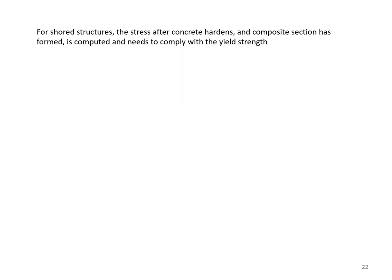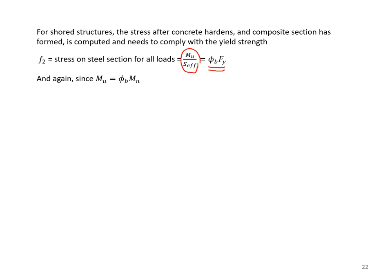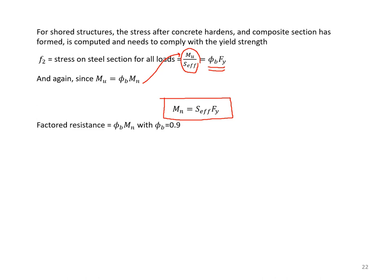For the shored system, all loads are carried by the composite section after concrete hardens. Only F2 stress applies: Mu divided by SEFF. Setting this equal to phi-B times Fy and substituting Mu equals phi-B times Mn gives Mn equal to SEFF times Fy. The factored resistance is phi-B times Mn. Two factors mainly contribute to bending resistance: the strength of shear connectors, which affects SEFF, and shoring, which helps utilize the full yield strength.